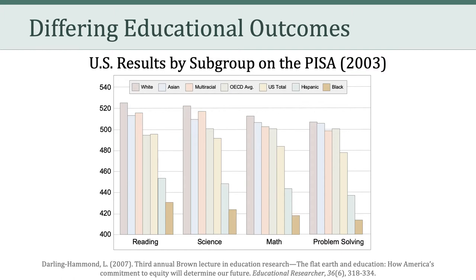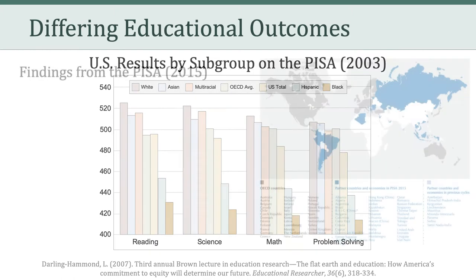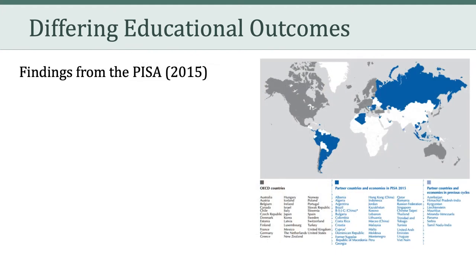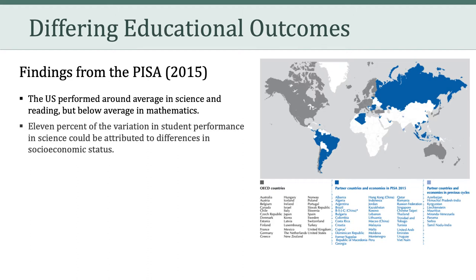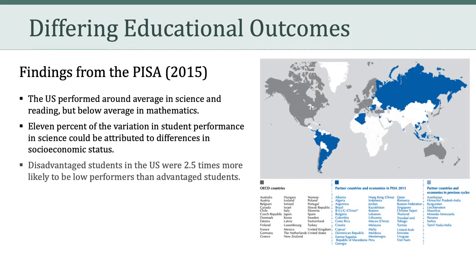The data in the Darling Hammond article was a bit dated, so I wanted to share some findings from the 2015 PISA, which states that the U.S. performed around average in science and reading but below average in mathematics. 11% of the variation in student performance in science could be attributed to differences in socioeconomic status. Disadvantaged students in the U.S. were two and a half times more likely to be low performers than advantaged students.